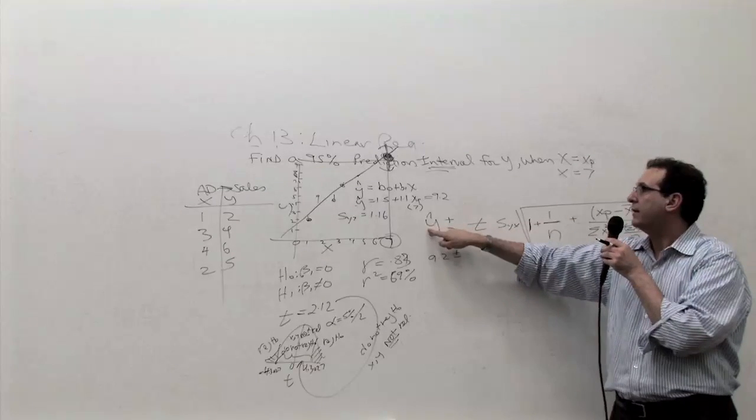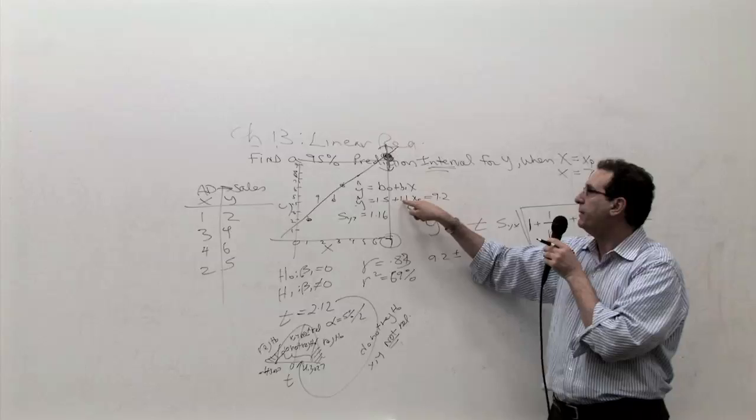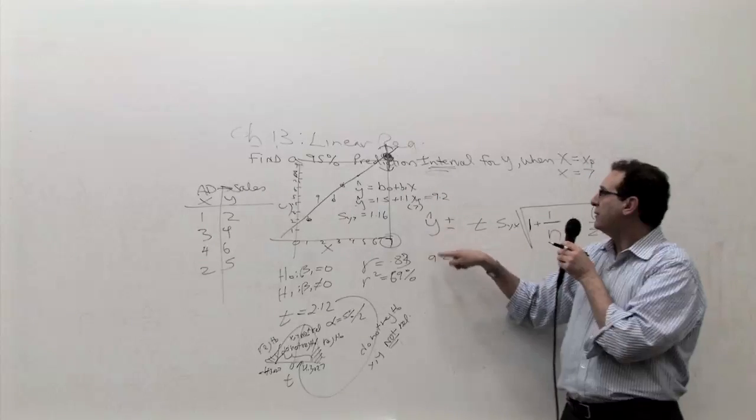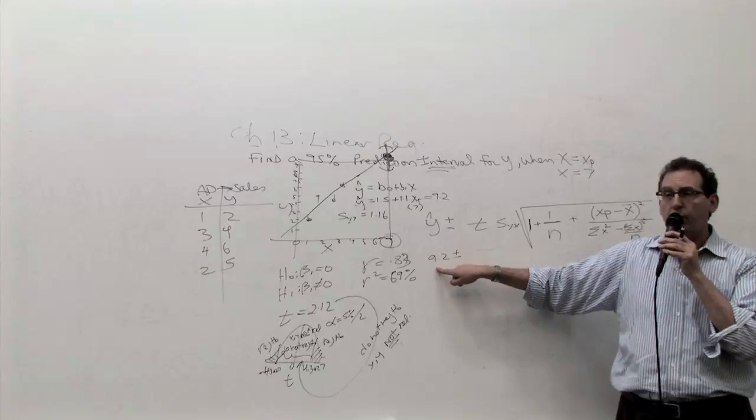First you've got to figure out your y hat. Well, you plug in a 7, 7 times b1 is 7.7. So the y hat, after all is said and done, is 9.2.